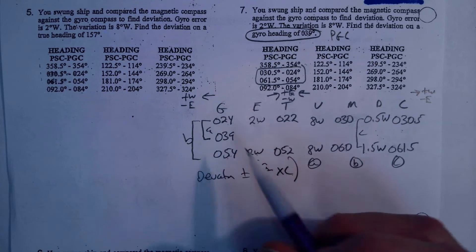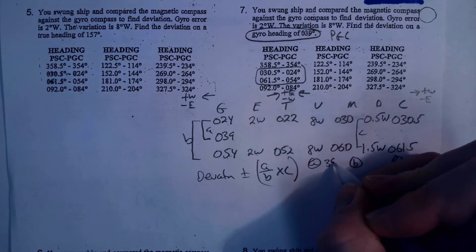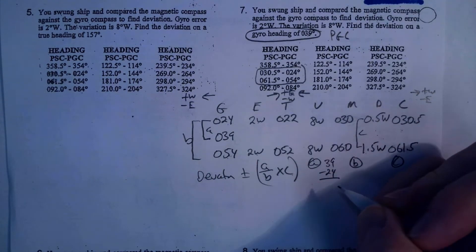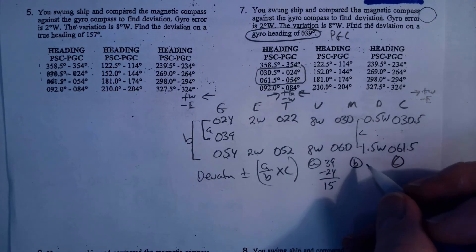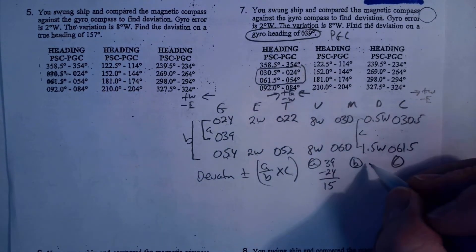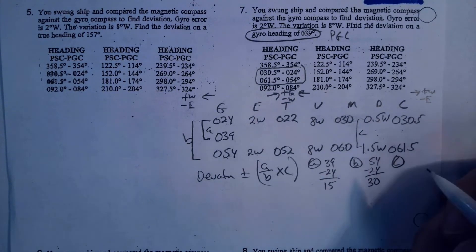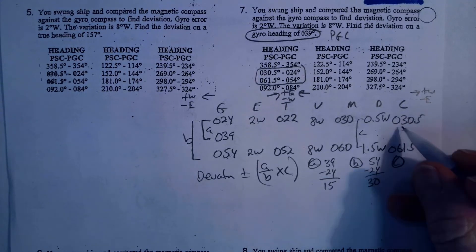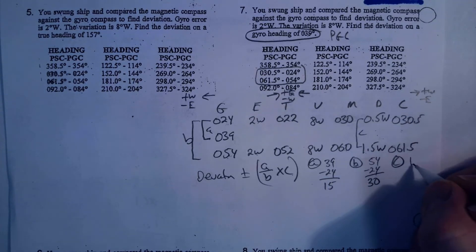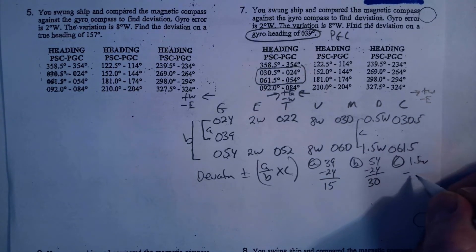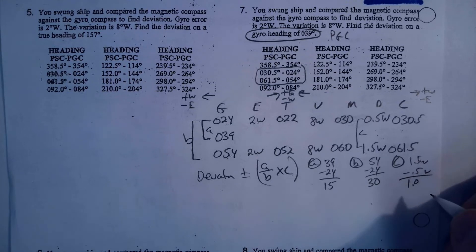So, let me calculate the values of A, B, C. So, A is 39 minus 24, and that's going to be 15. B is going to be 54 minus 24, and that's 30. And then C is going to be 1.5 west minus 0.5 west, and that's going to be 1.0.